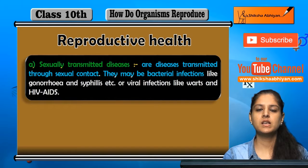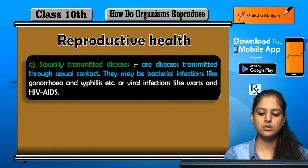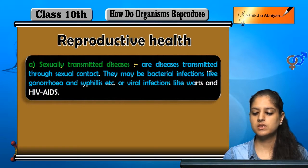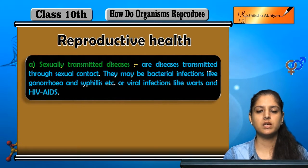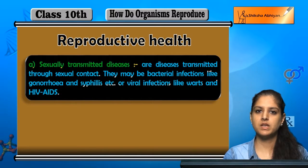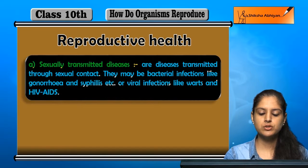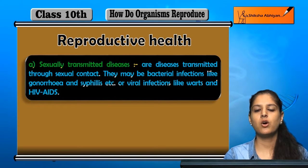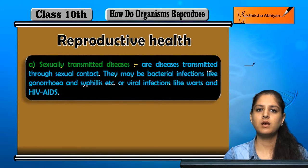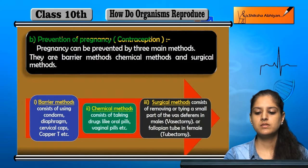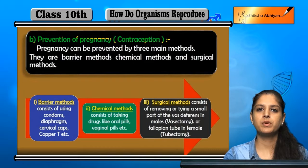Ye bacterial infections bhi ho sakti hain, jaise ki gonorrhea and syphilis. Viral infections bhi ho sakti hain, jaise ki warts and HIV AIDS. So sexually transmitted diseases se apne aap ko protect karna it is very important, and we should be aware of what these diseases are, in ke symptoms kya hote hain, aur in se prevent karne ki kya measures hote hain.